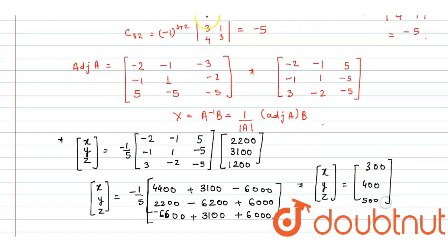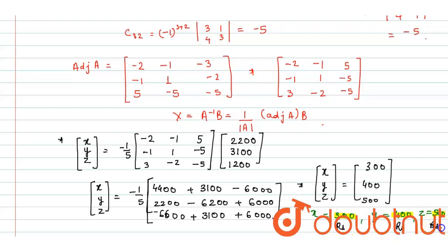On comparing both sides we get the value of x, y and z. So we can say x equals to 300, y equals to 400 and z equals to 500. So the award money for each value is Rs. 300 for tolerance, Rs. 400 for kindness and Rs. 500 for kindness also. Another value the student should have is sharing. If a student is helping and sharing, helping other students in their studies, it is also a concern for an award. It should be awarded for its helping nature. Thank you.